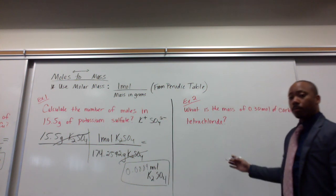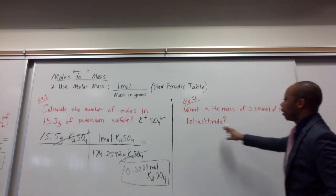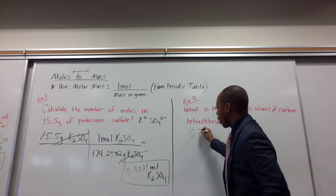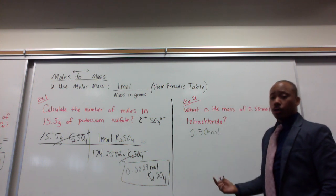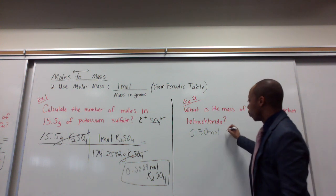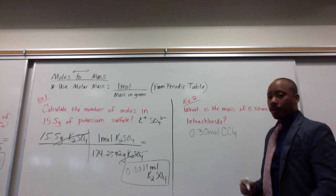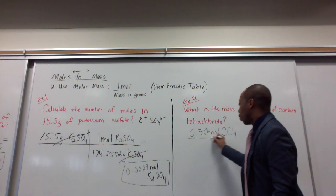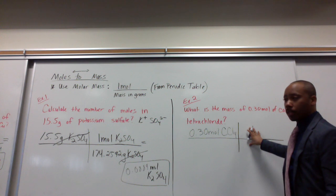Now let's look at going from moles to grams. What is the mass of 0.3 moles of carbon tetrachloride? So the first thing we do is start with 0.30 moles. Carbon tetrachloride is carbon tetra, meaning four chlorines. So we have one carbon, four chlorines. That's our formula. Now, knowing our formula, we can get our molar mass. We need the molar mass to go from moles to grams. That's the conversion we use here.